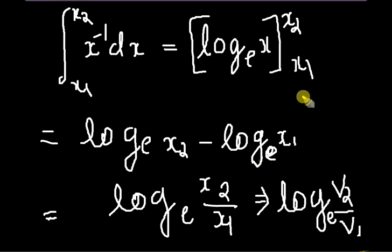We know that integral technique, so I just use it right here. Applying limits, we get log to the base E of X2 minus log to the base E of X1. We get it just like this by applying limits.